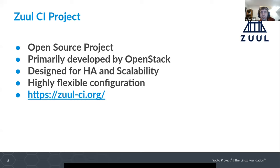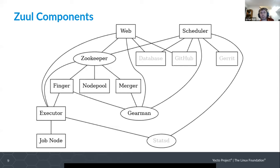Zuul has a highly flexible configuration, so you can do all kinds of different things with it, which is really awesome. It does require a little bit of configuration to get up and running the first time. They have really good documentation. Zuul is actually not one thing — it's a whole bunch of different small components that all work together to do the continuous integration and continuous delivery. This is why it has such good high availability and scalability, because you can spin up multiple of these components for redundancy or scale them up to load balance.